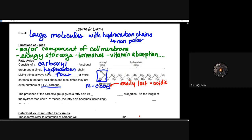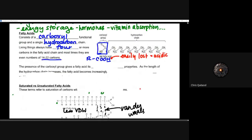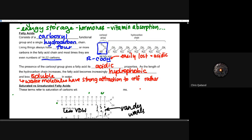The presence of the carboxyl group gives fatty acids their acidic properties. As the length of the hydrocarbon chain increases, the fatty acid becomes increasingly hydrophobic. As a result of that hydrophobic nature, water molecules will have a very strong attraction to themselves rather than to the hydrocarbon, forming a water saturation sheath around the hydrophobic component. This less-soluble aspect is important because it allows for the separation of water groupings via the cellular membrane.